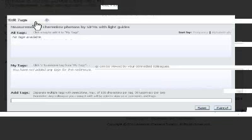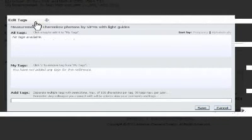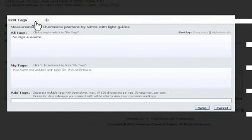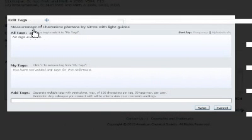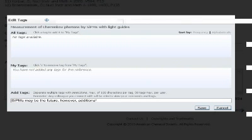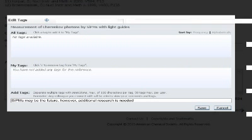SciFinder allows you the opportunity to tag or label references. You can accomplish this either with individual references or when grouped as a set. Consider this an opportunity to jot down critical messages or thought tags. These can include descriptive terms or keywords that can facilitate grouping and recall of references at a later point.